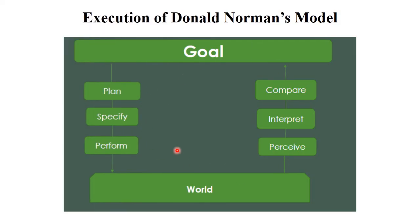This is the structure of Donald Norman's model with different types of examples. In the goal, the first three steps are plan, specify, and perform. After that, pursue, interpret, and compare — these fulfill your goal. This is called the execution of Donald Norman's model. Hope you understood Donald Norman's model in detail with examples. Keep practicing. Thank you.